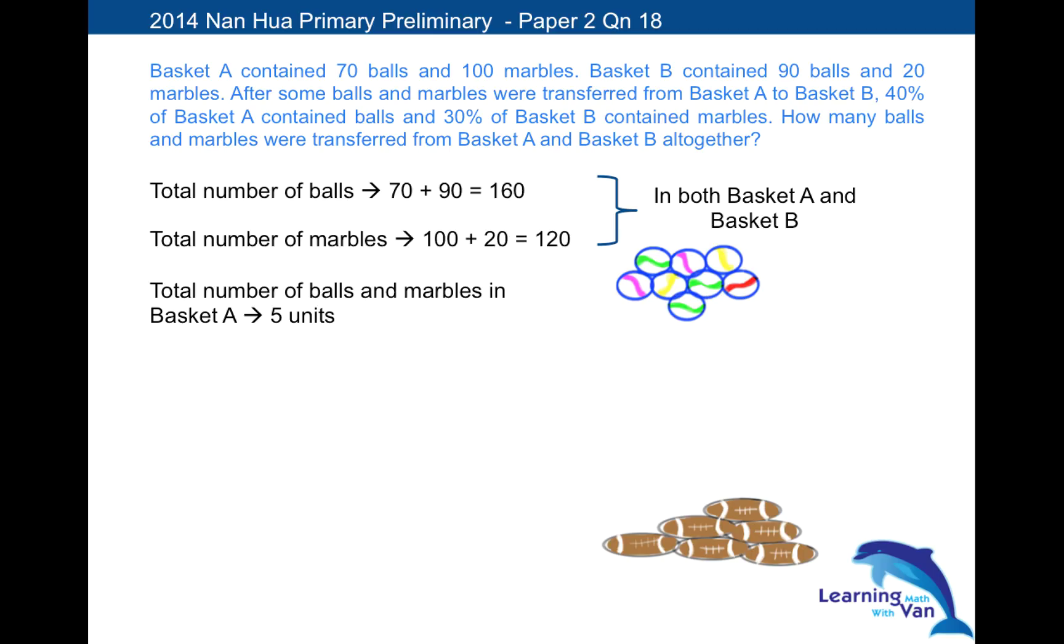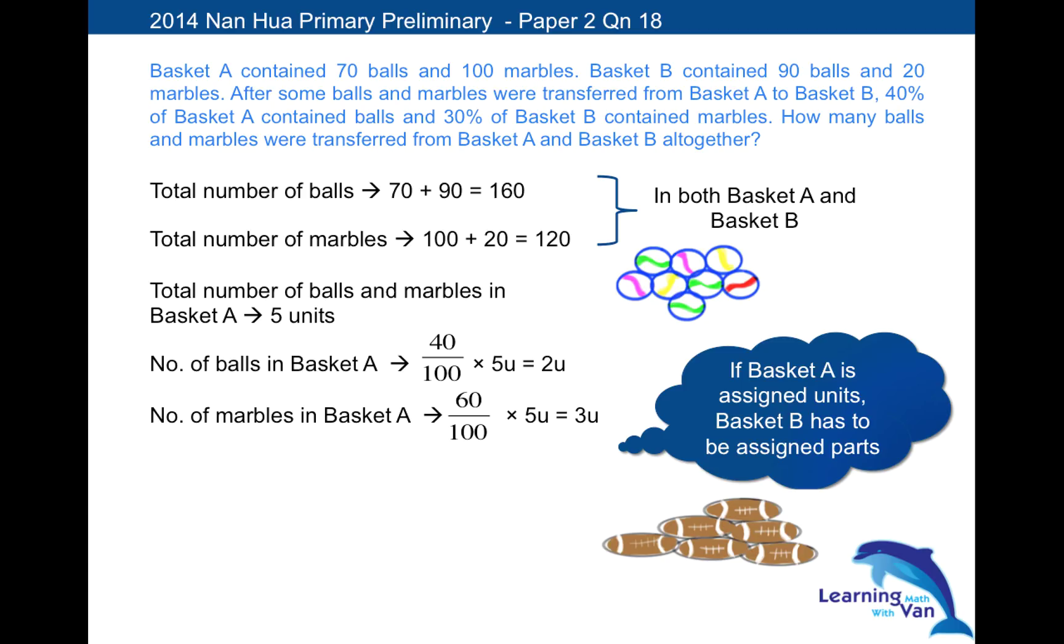Proceed further. So what is the number of balls in basket A? In terms of units, we work out to be 40% of 5 units, which is 2 units. And likewise, what is the number of marbles in basket A? We can work out easily with the remaining 60%, which should work out to be 3 units. Like what I just said, to reinforce the point again, basket B has to be called parts so they will not get mixed up with the two. Unless there is a direct relationship being told here. But there is none.